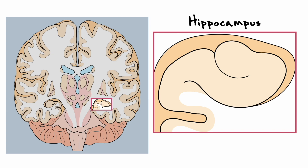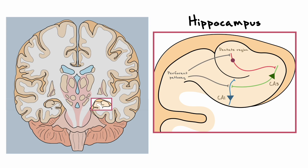When it comes to the circuitry of the hippocampus, we must first note that it has three important regions with distinct cells: the CA1 and CA3 regions, which both have pyramidal neurons, and the dentate region, which has granule neurons. The input to the hippocampus comes from what is known as the perforant pathway, which makes connections on granule cells as well as CA1 cells. Granule cells in the dentate region synapse to CA3 cells through the mossy fiber pathway, and CA3 cells synapse on CA1 neurons through the Schaffer collateral pathway. This completes the basic circuitry of the hippocampus.